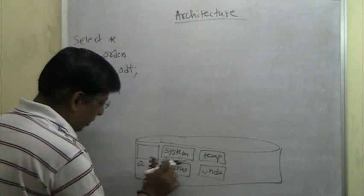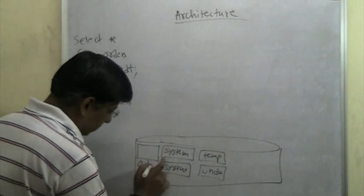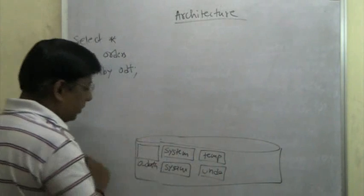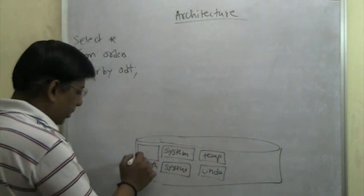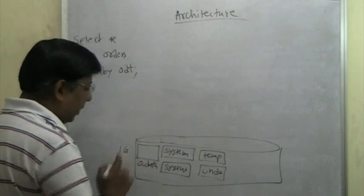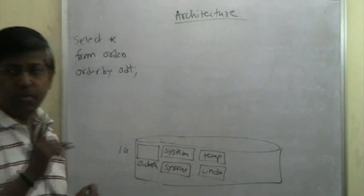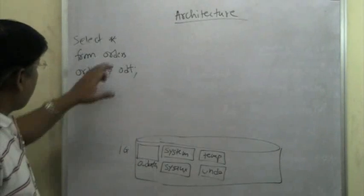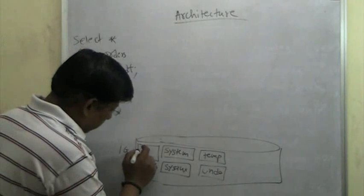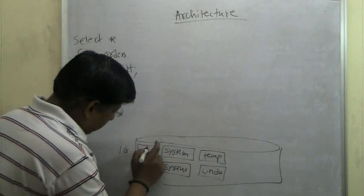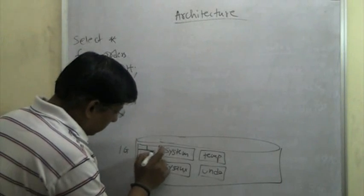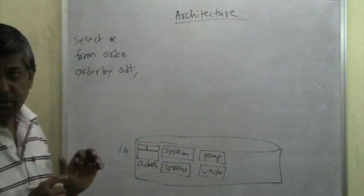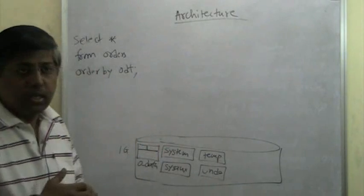This OData tablespace — assume that it is one gigabyte with one data file, and my orders table is sitting here with the first extent and the second extent. Those are the two extents for the orders table.